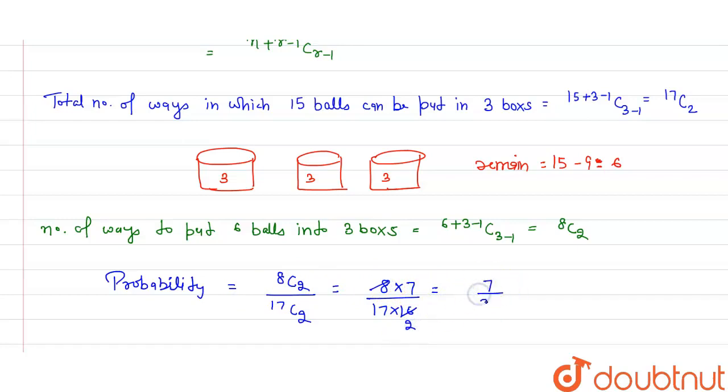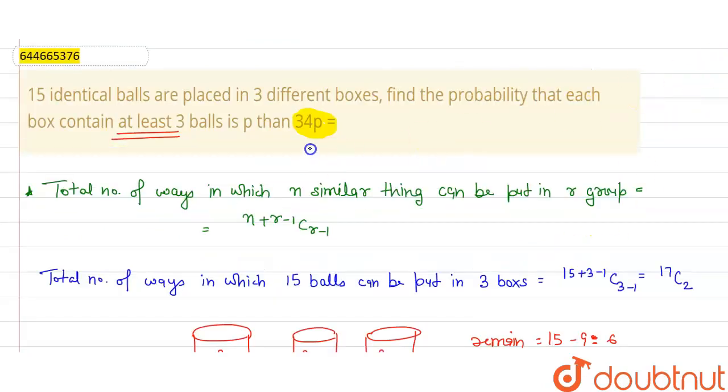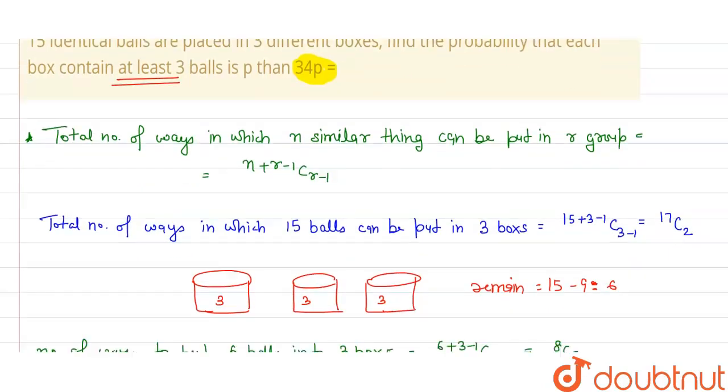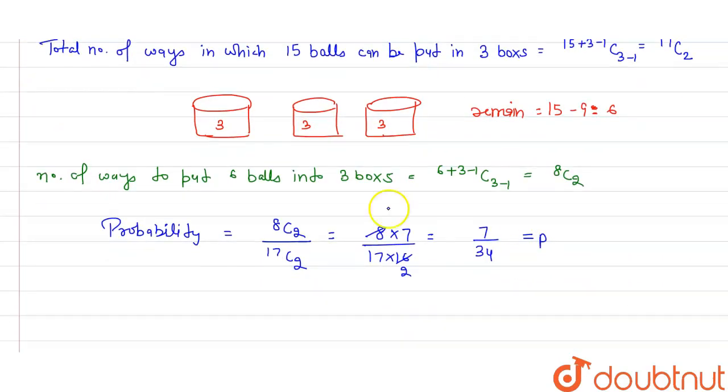This is equal to 7 by 34, this is equal to P. Now in the question what we have to find is 34P. So my 34P value is equal to 7 by 34 into 34, that is equal to 7. So 34P is equal to 7. Thank you.